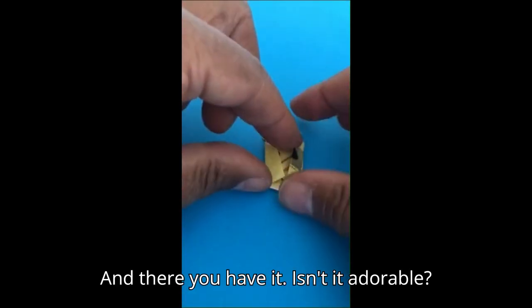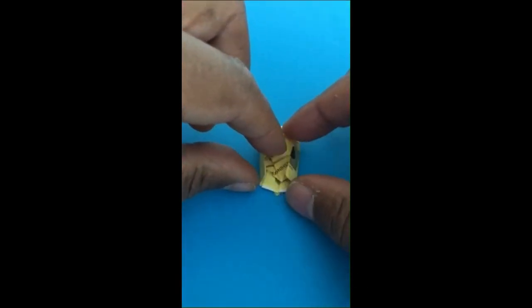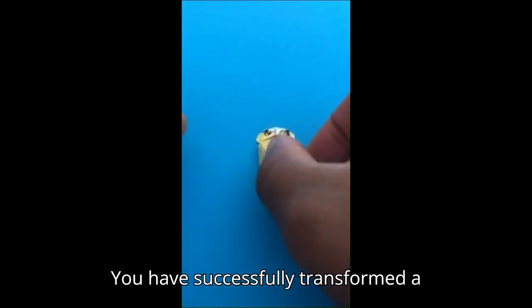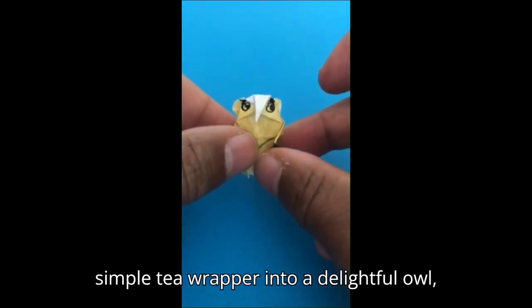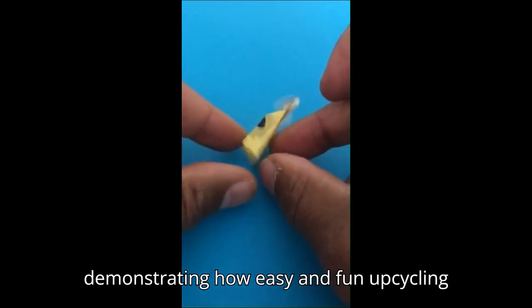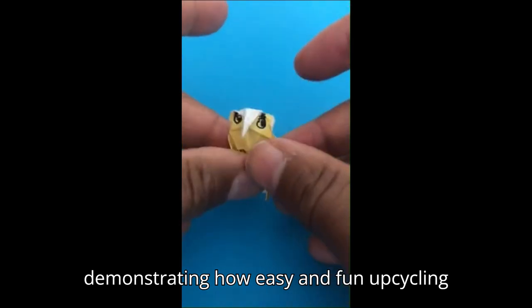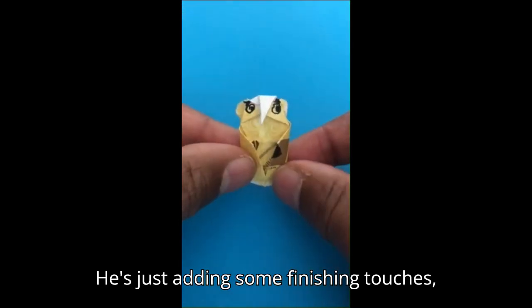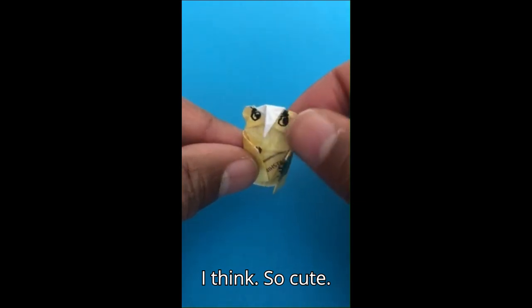And there you have it. Isn't it adorable? You have successfully transformed a simple tea wrapper into a delightful owl, demonstrating how easy and fun upcycling can be. He's just adding some finishing touches. So cute!